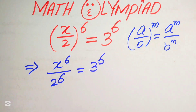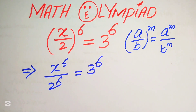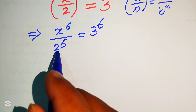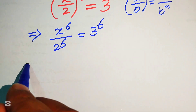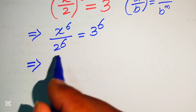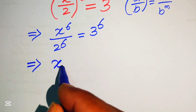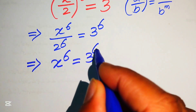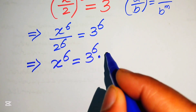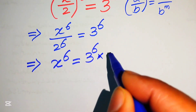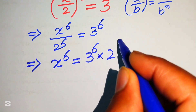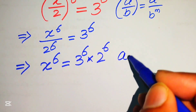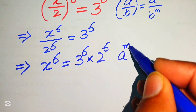In the next step, we move 2^6 to the right-hand side, so it becomes x^6 equals 3^6 multiplied by 2^6. Here we need another exponent law.